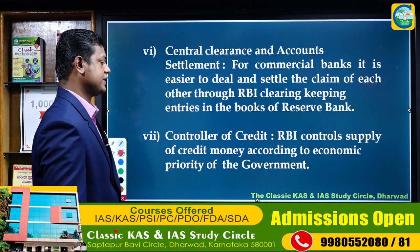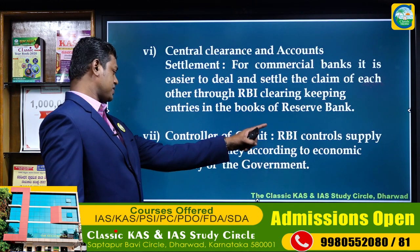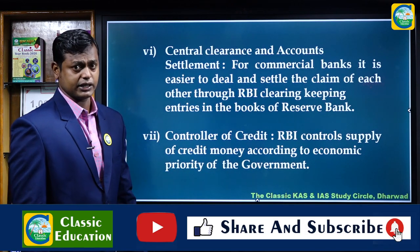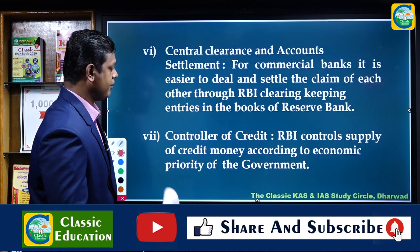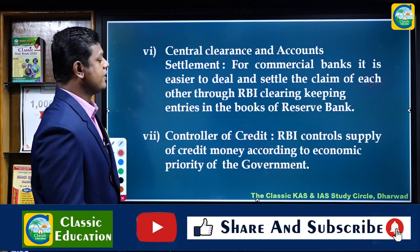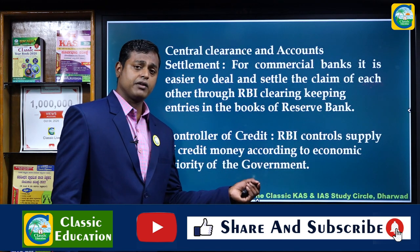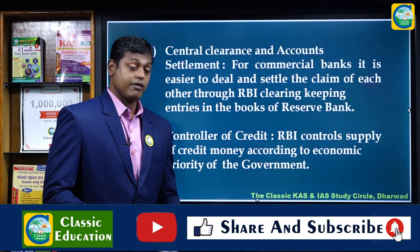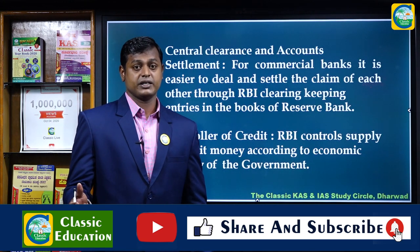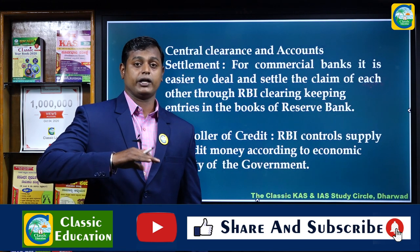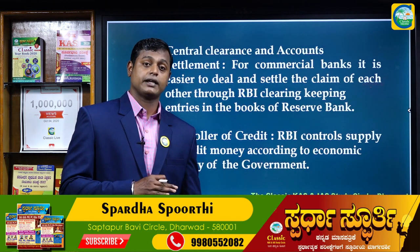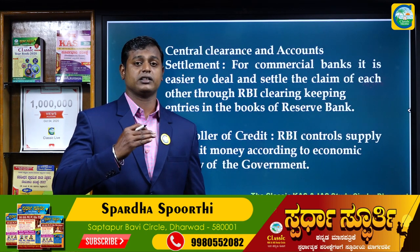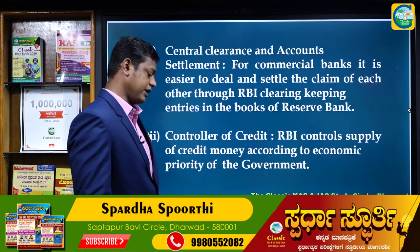The seventh main function is 'Controller of Credit.' RBI controls the supply of credit money according to the economic priority of the government. RBI has the power to control credit supply. During inflation, tools like SLR and CRR are managed by RBI.